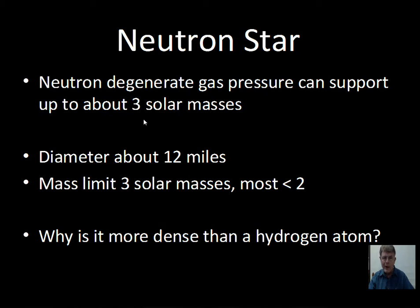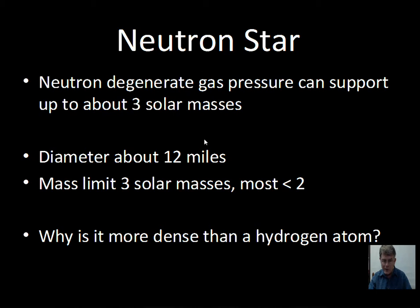A neutron star is a more massive object than a white dwarf, up to about three times the mass of the Sun, though we only have confirmed observations of up to about two times the mass of the Sun. The diameter is roughly the size of a small city — about 12 miles across — so having two times the mass of the Sun packed into a sphere only 12 miles across makes it incredibly dense. Interestingly, the nucleus of an atom has roughly the density of a neutron star.